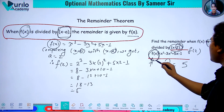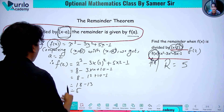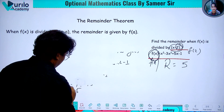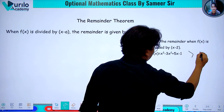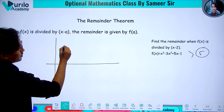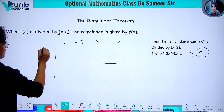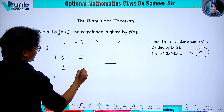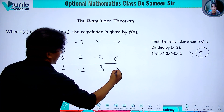We can check this using synthetic division. The coefficients are 1, minus 3, 5, minus 1, and we use 2. Carrying through the synthetic division confirms the remainder is 5.